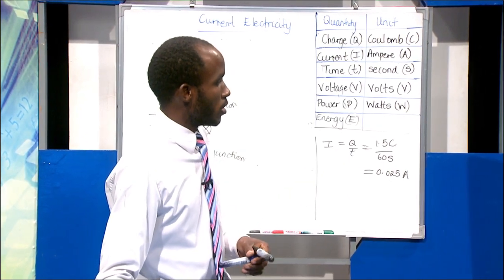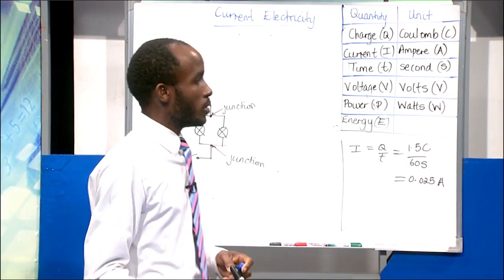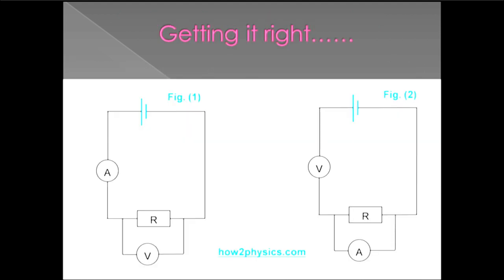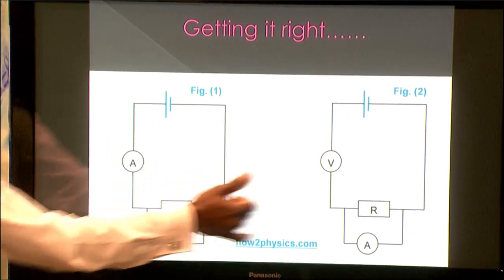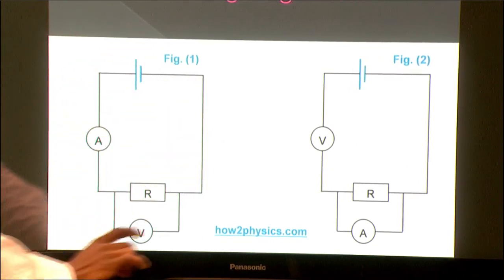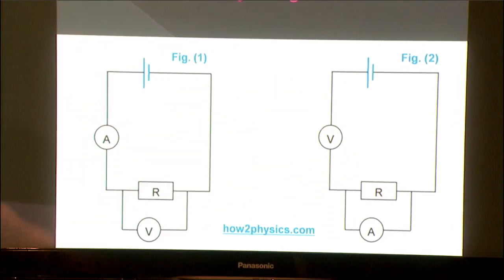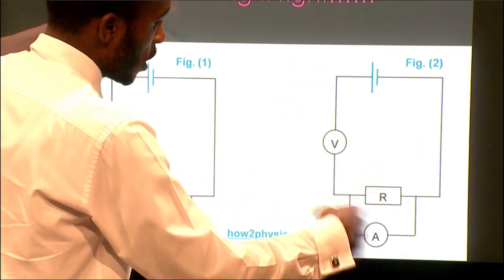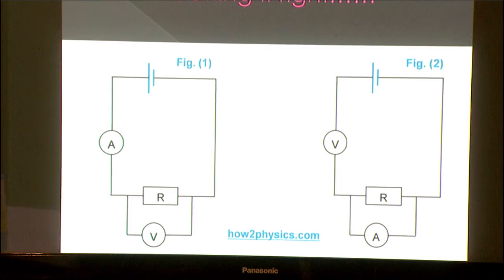Voltmeters measure voltage and are connected across loads (in parallel with the component). Ammeters measure current and are connected in line with the circuit (in series). In the diagram, the ammeter is in line with the circuit and the voltmeter is connected across the load — that is the correct arrangement. The wrong arrangement has the symbols reversed: voltmeter in line and ammeter connected across — that cannot be correct.